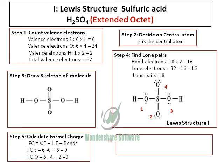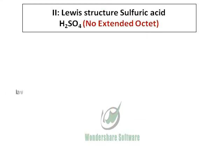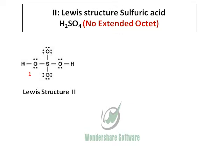Since there is a Lewis Structure 1, there should be a second one. The second Lewis structure is the one in which there is no extended octet. The skeleton of the molecule has four single-bonded oxygens attached to sulfur. Two of the oxygens have six electrons — three lone pairs — and two oxygens have two lone pairs each, or four electrons. This structure is different from the previous one where sulfur had a double-bonded oxygen.